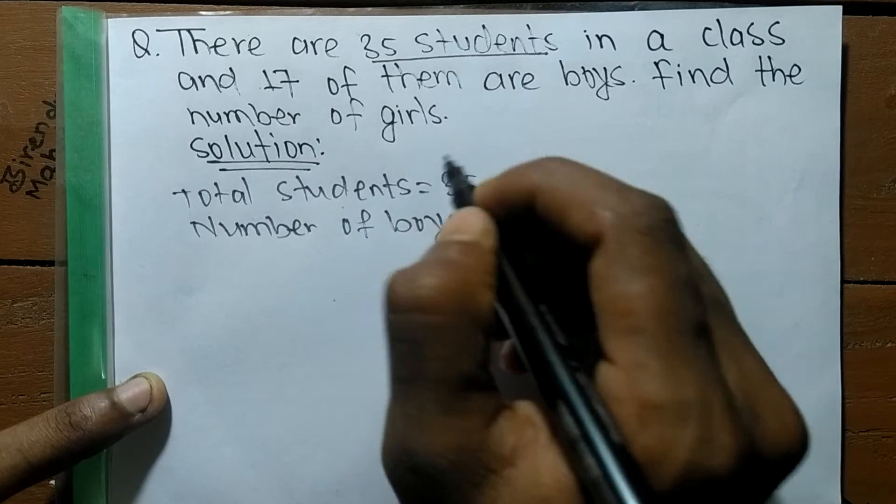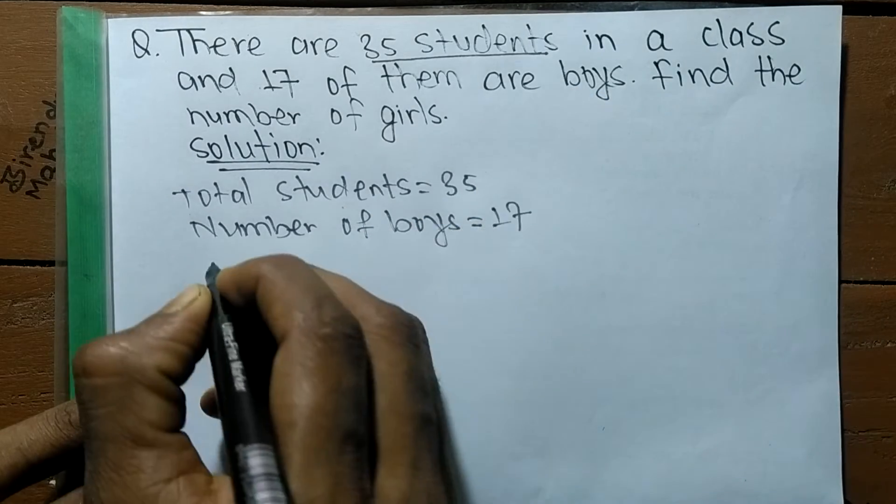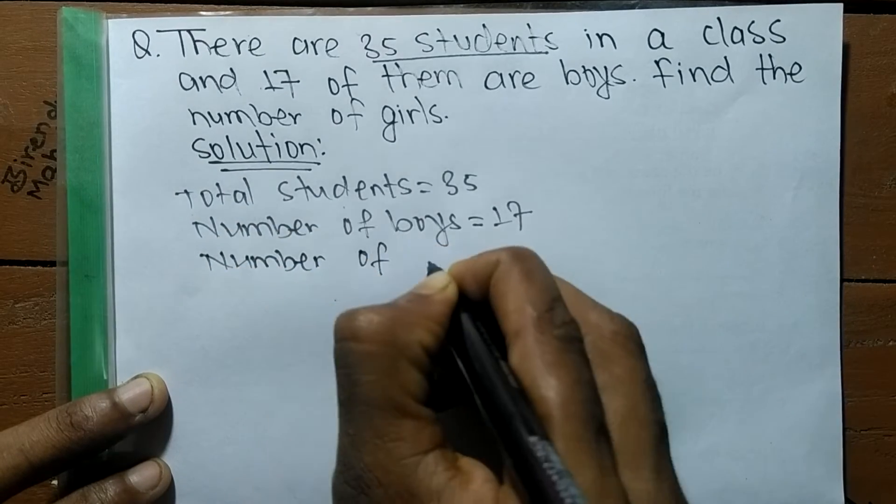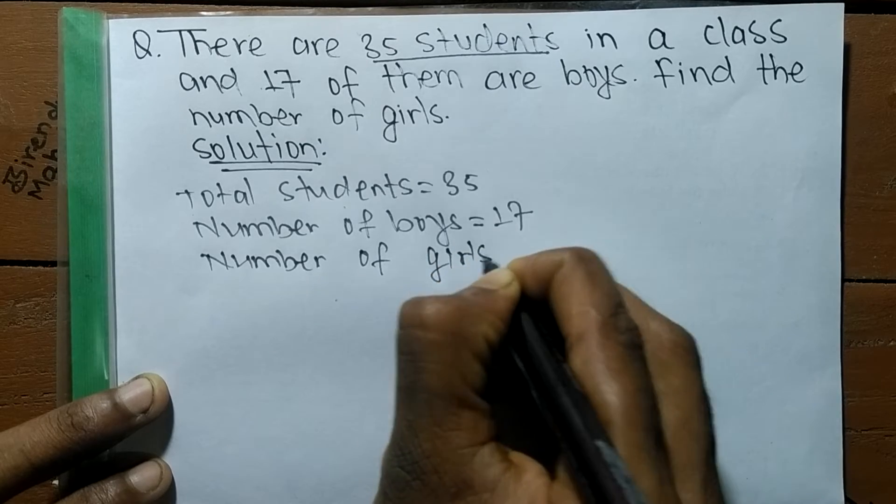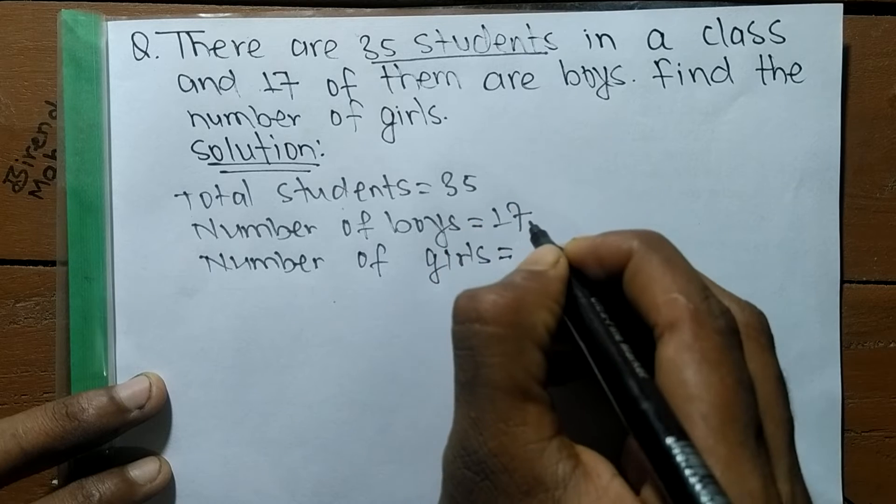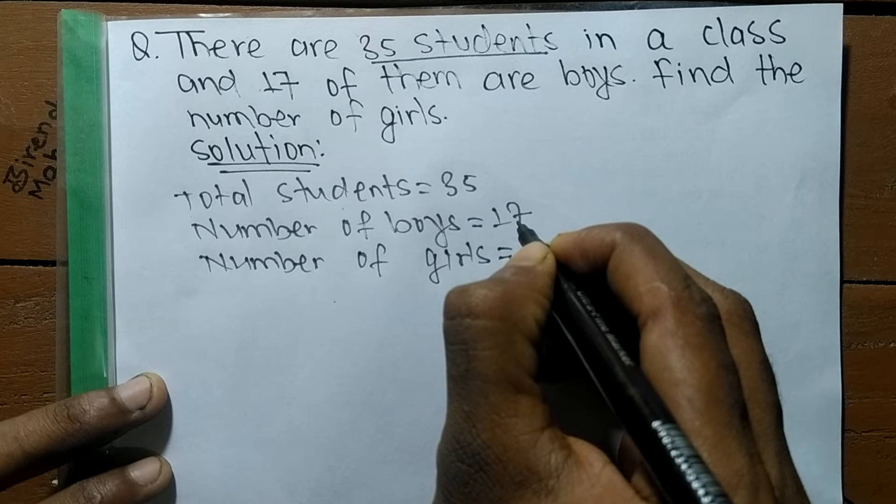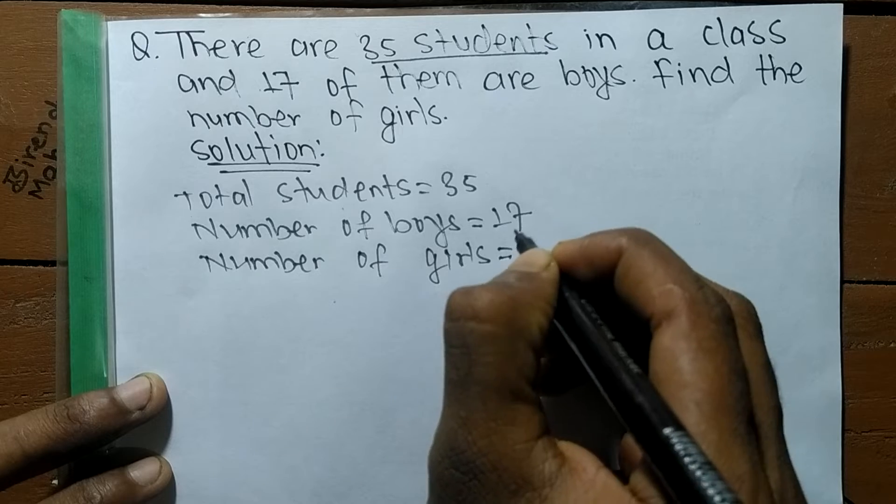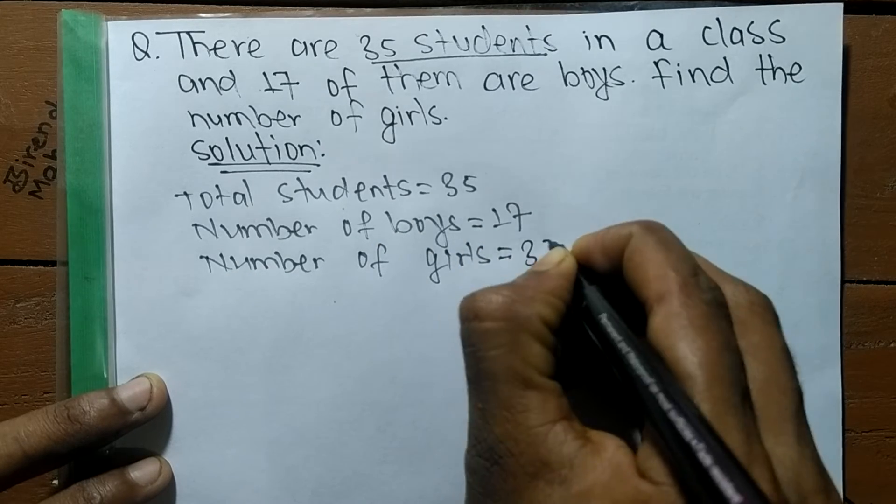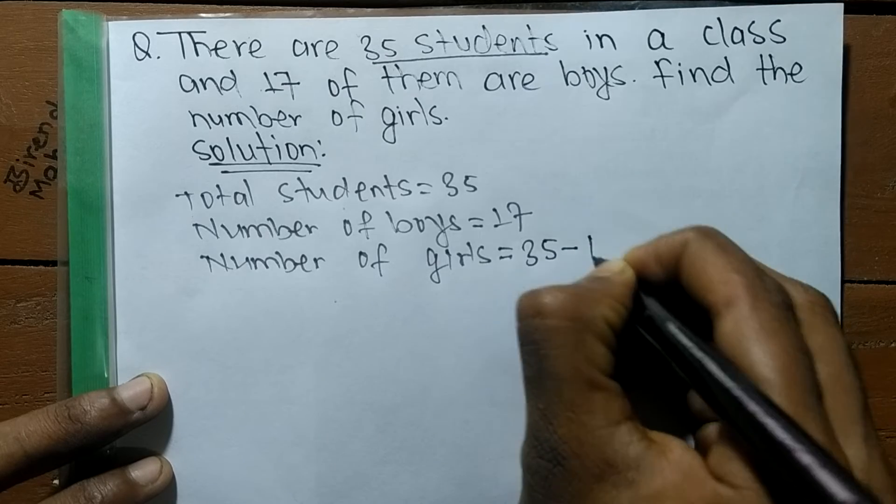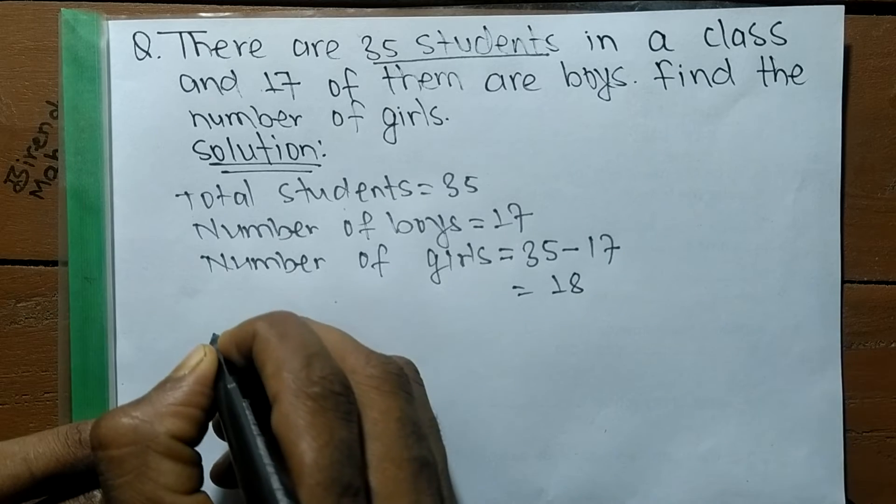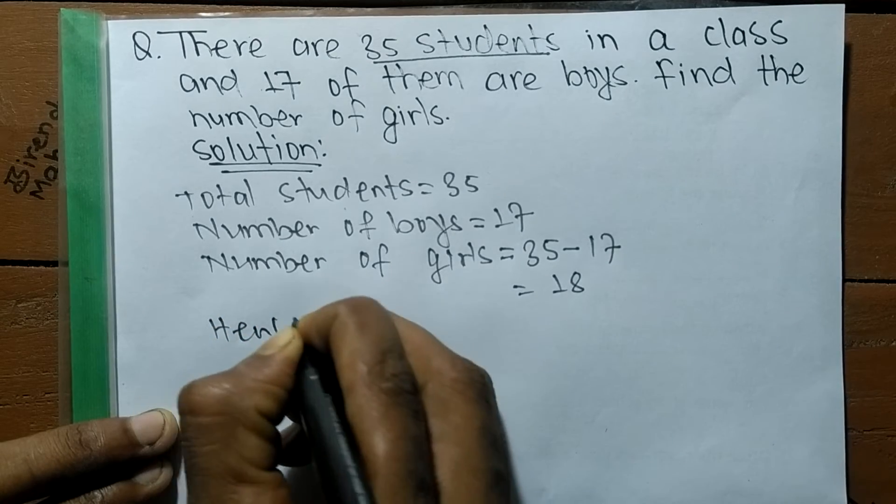So among the total students we have to find out the number of girls. As you know, number of girls is equal to total students minus the boys. So total students is 35, and 17 are boys, so the remaining will be girls. The number of girls is equal to 35 minus 17, which is equal to 18. Hence, the required number of girls is 18.